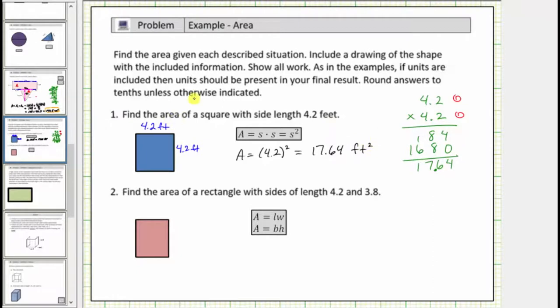But the directions do say round to the tenths place value. So we'll also give a decimal approximation for this area. Rounding to the tenths place value, the four in the hundredths indicates to round down. And therefore, we say the area is approximately seventeen point six, or seventeen and six tenths square feet.